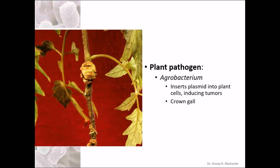We are using Agrobacterium tumefaciens plasmids — mainly Ti plasmids — in transferring the required gene into the plant in biotechnology. Hence this organism is extremely important for gene transfer into plants.